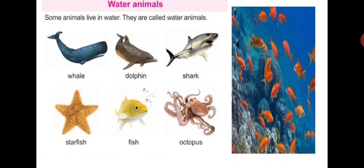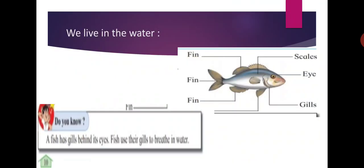We live in the water. There are different kinds of water animals like the whale, dolphin, shark, starfish, fish, and octopus. They live in water. Fish have fins and use their fins to move in water. There are scales on their body. A fish has gills behind its eyes, and fish use gills to breathe in water.